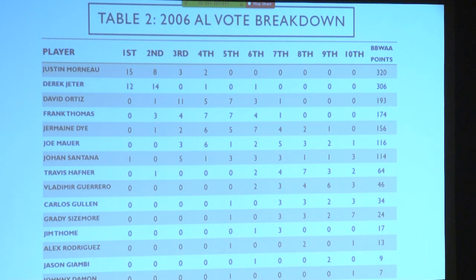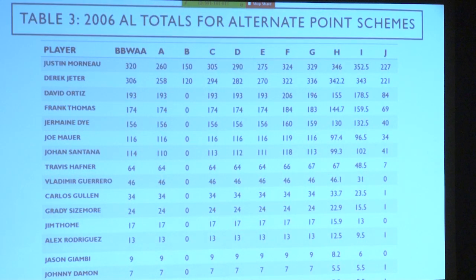For example, in 2006 Justin Morneau was named the MVP and received 15 first-place votes, followed by Derek Jeter with 12. Under the original scheme, Morneau wins by quite a bit — 14 points. But if we look at Scheme G, which gives 13 for first place, 12 for second, and 9 for third, Derek Jeter would have been named the MVP under a perfectly reasonable system. This is an example of an MVP reversal.